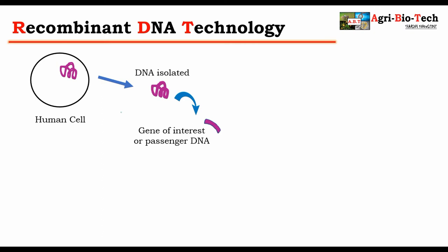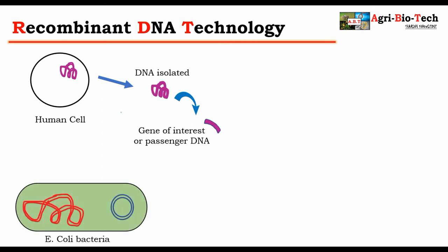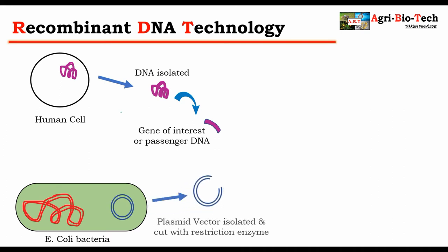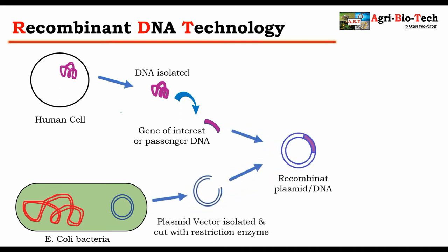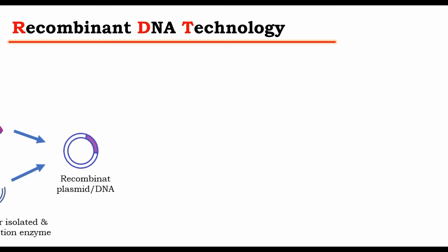After that, a suitable vector — that is, a plasmid of bacteria — is isolated. The donor DNA is then inserted into this plasmid vector. This modified plasmid is now called recombinant DNA or recombinant plasmid.